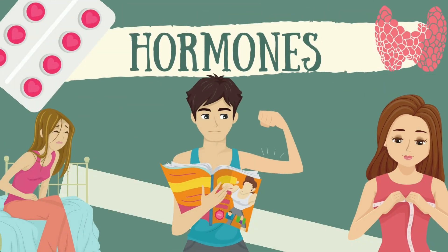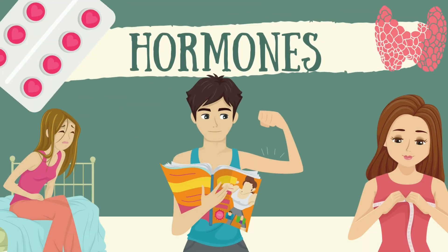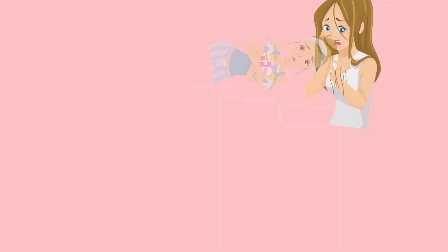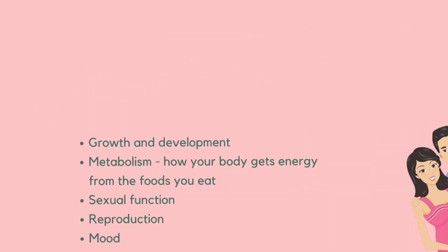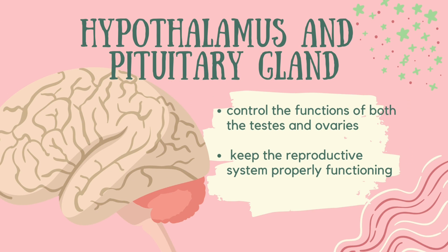Now, let us talk about hormones. When we say hormones, they are chemical messengers. They travel in your bloodstream to tissues and organs. They work slowly over time and affect many different processes including growth and metabolism, sexual function, reproduction, and they also affect your mood. The hypothalamus and pituitary gland control the functions of both the testes and ovaries, keeping the reproductive system properly functioning.